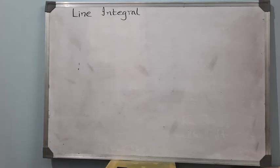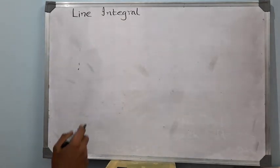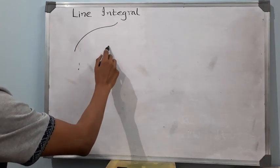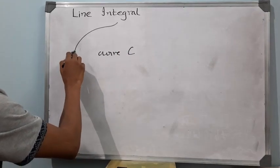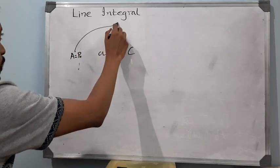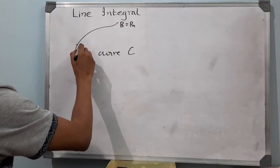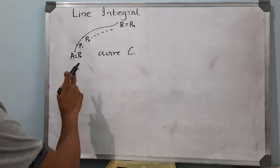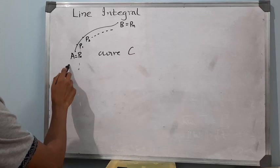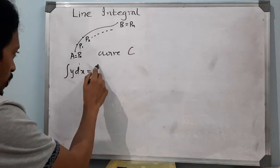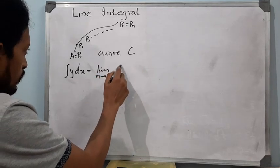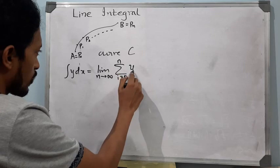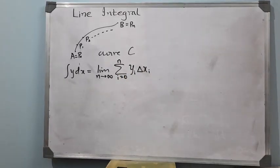Hello students. In this video I will be discussing about the line integral. If I have a curve C, let me take the point A as P0 and the point B as Pn, with P1, P2, and so on in between. If we recall the integral ∫y dx, this was the limit as n tends to infinity of the summation i equal to 1 to n of yᵢ Δxᵢ.